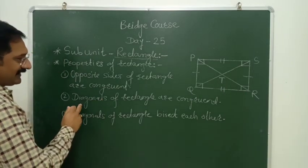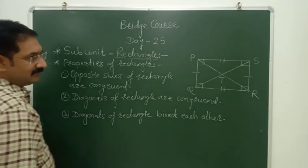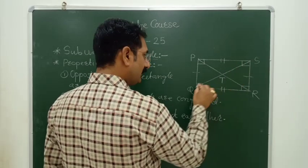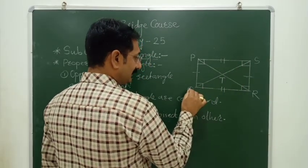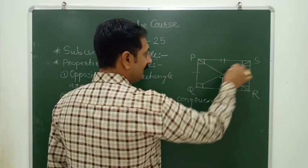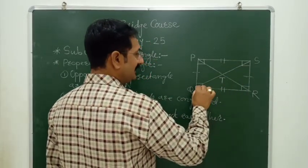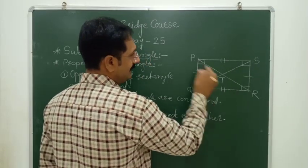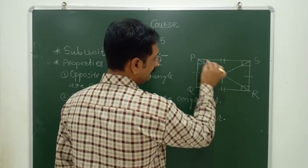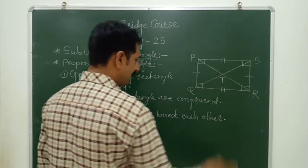Next, second property: Diagonals of rectangle are congruent. Diagonals means the segment joining the opposite vertex of quadrilateral. Q and S are opposite vertex, segment QS is a diagonal. And P and R are opposite vertex, segment PR is a diagonal.